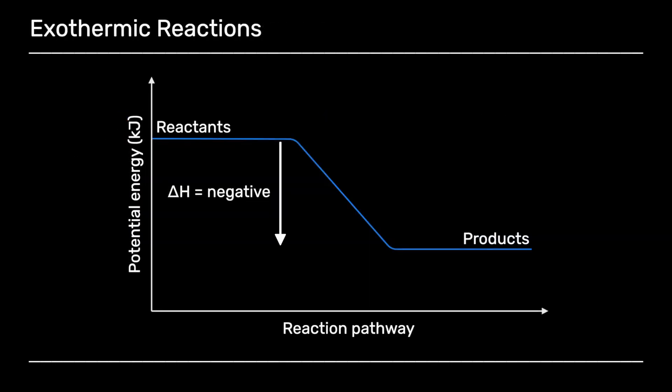So as mentioned earlier, most chemical reactions are ones where the system, the chemicals, release energy to the surroundings. These reactions are called exothermic. And this is the situation where the system is losing some energy. It's being transmitted to the surroundings. So the surroundings are getting warmer. The system is losing energy.